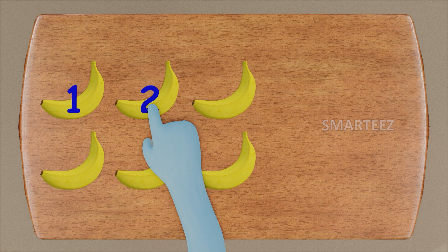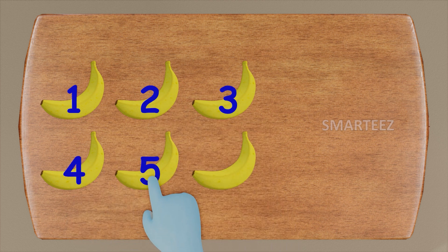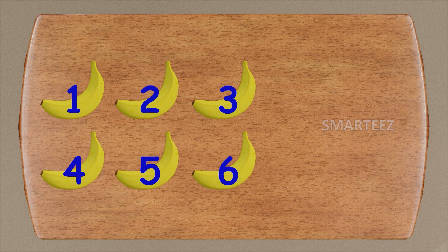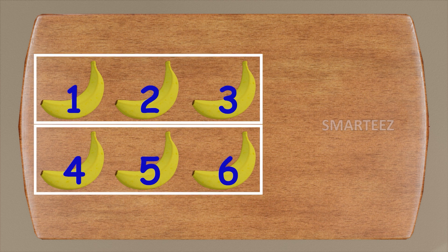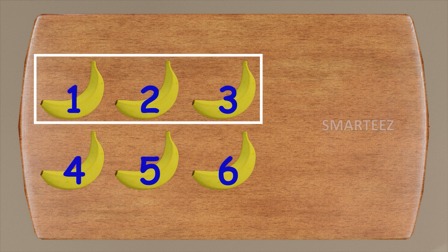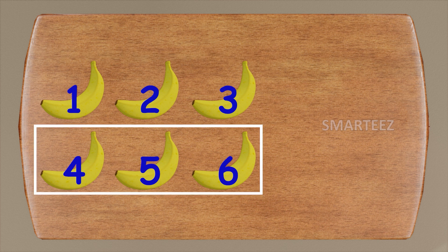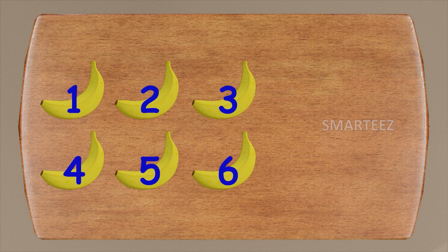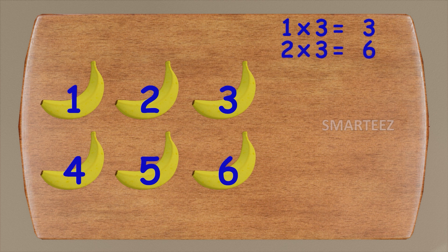That's one, that's two, that's three, that's four, that's five, and that's six. We already know if we add three and three, we get six. We can say we have two times three bananas. First, we have three bananas — that's one set of three bananas. Then we have three more bananas — that's the second set of three bananas. So we can call this two sets of three bananas or two times three bananas. One times three is three and two times three is six.